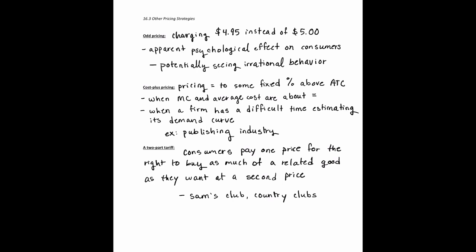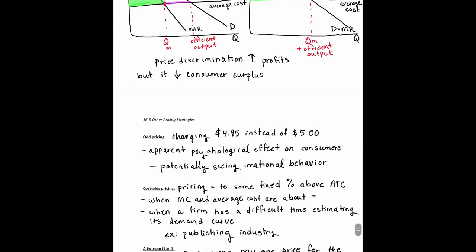A company might use a two-part tariff to capture more surplus. Disney World is a good example — they can identify customers' willingness to pay for admission tickets and make profit selling those tickets, but then also charge extra for certain rides. That sums up pricing strategy — it's a pretty short chapter. If you have any questions, feel free to let me know. Otherwise, have a good day.